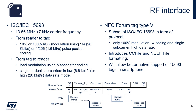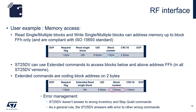The NFC Forum subsequently classifies tags as Type V or Type 5, restricted to only 100% modulation, one-quarter coding, and single subcarrier, with high data rate along with capability container and NDEF file formatting. When accessing blocks with a 16-bit address, you will need to use extended commands where the block address is coded on 2 bytes. For error management, the SD25DV does not answer to wrong inventory and stay-quiet commands.